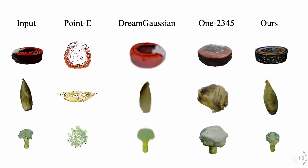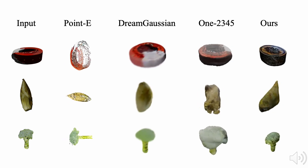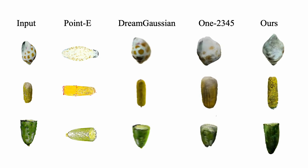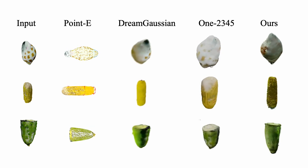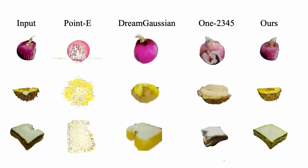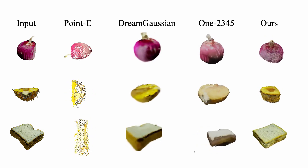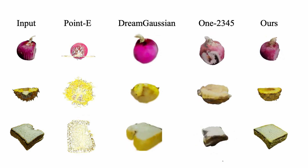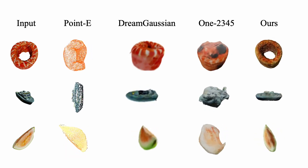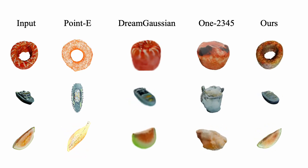Here are some results. Our method is evaluated against existing optimization-based 3D Gaussian frameworks and sampling-based pipelines utilizing other 3D representations. AGG showcases competitive generation abilities both qualitatively and quantitatively, while being several orders of magnitude faster.